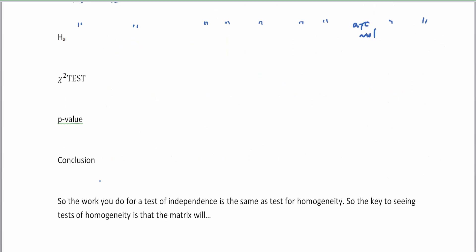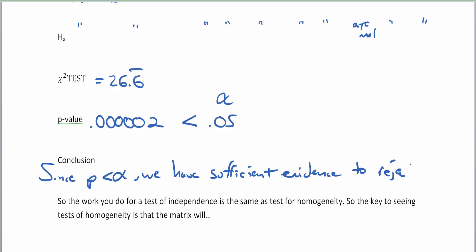The chi-squared test from the previous video gave us 26.6 as our test value. Our p-value was 0.123452, which was less than 0.05, our alpha. So our conclusion is since p was less than alpha, we have sufficient evidence to reject the null hypothesis and say that these groups are not the same.